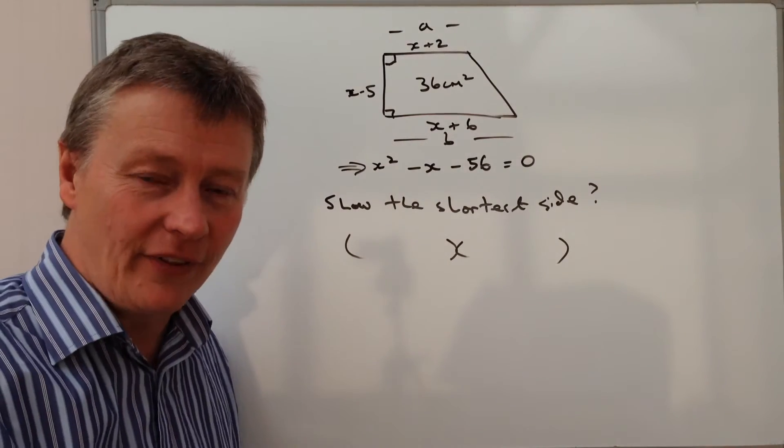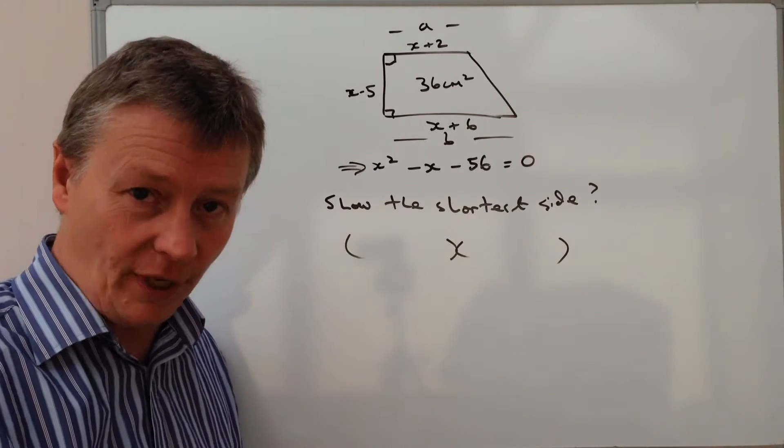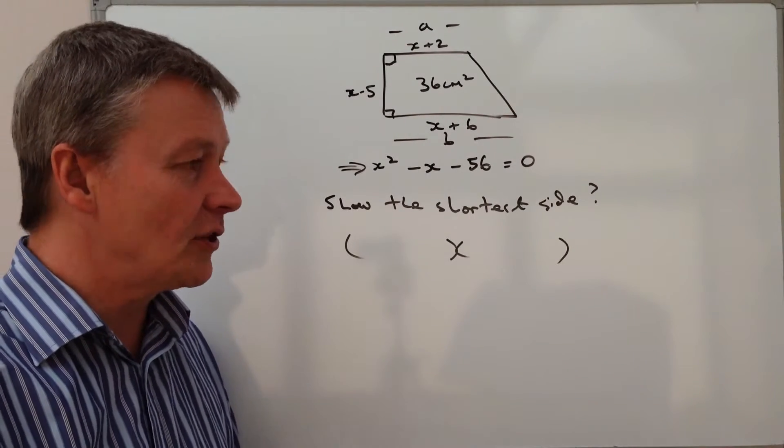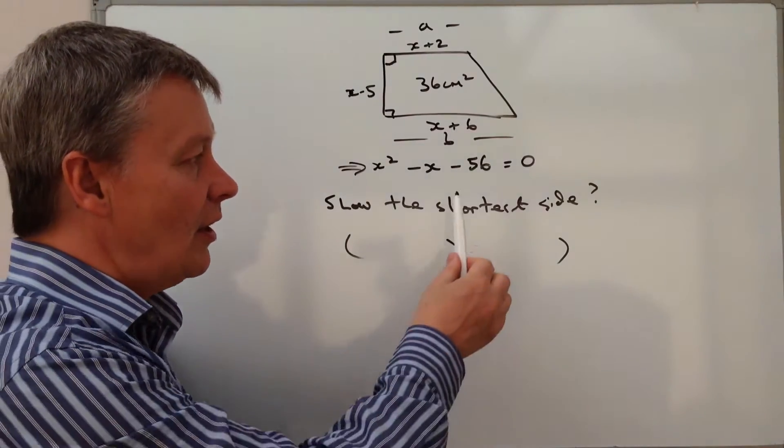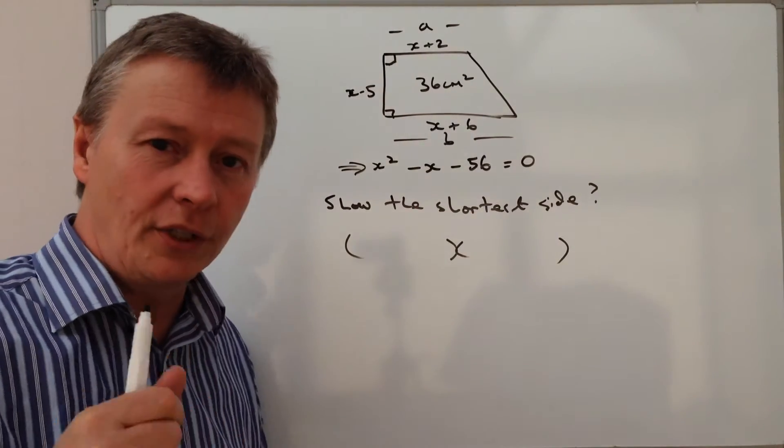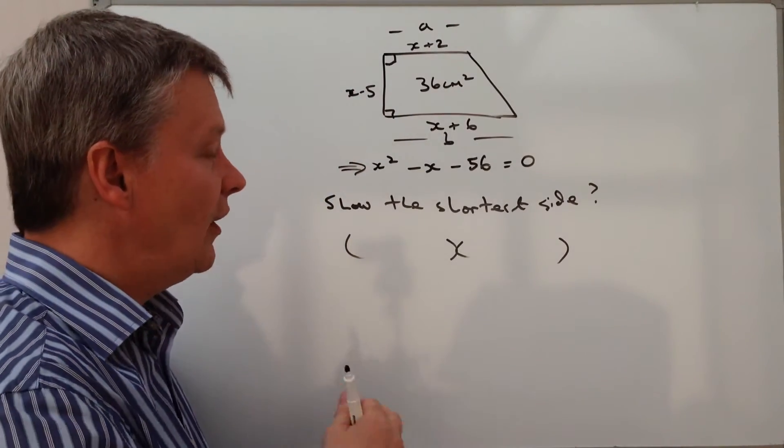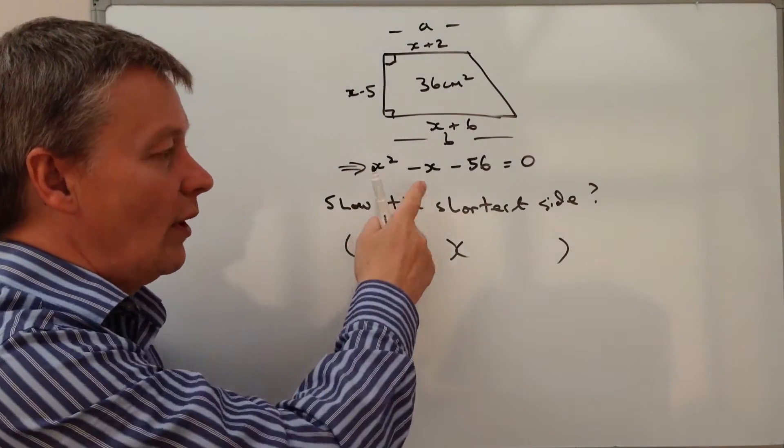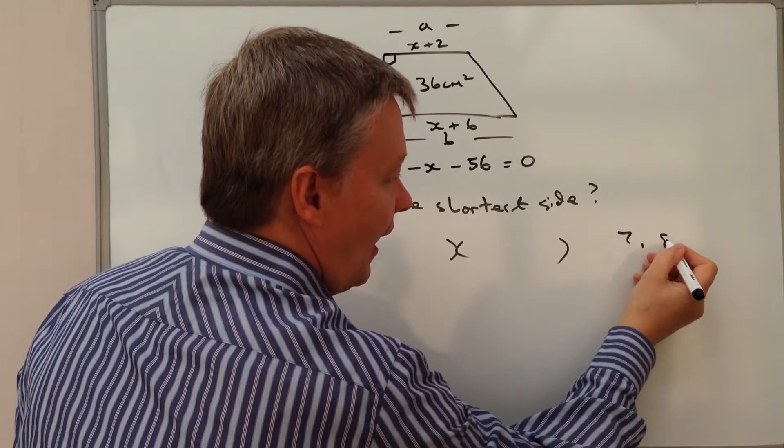There's a couple of different methods of doing that. You could use quadratic formula, you could use the cross method. However, I'm just going to use trial and error on this particular one because the only two factors of 56 that when you multiply them together will make 56 and when you add them together will make 1 or x is going to be 7 and 8.